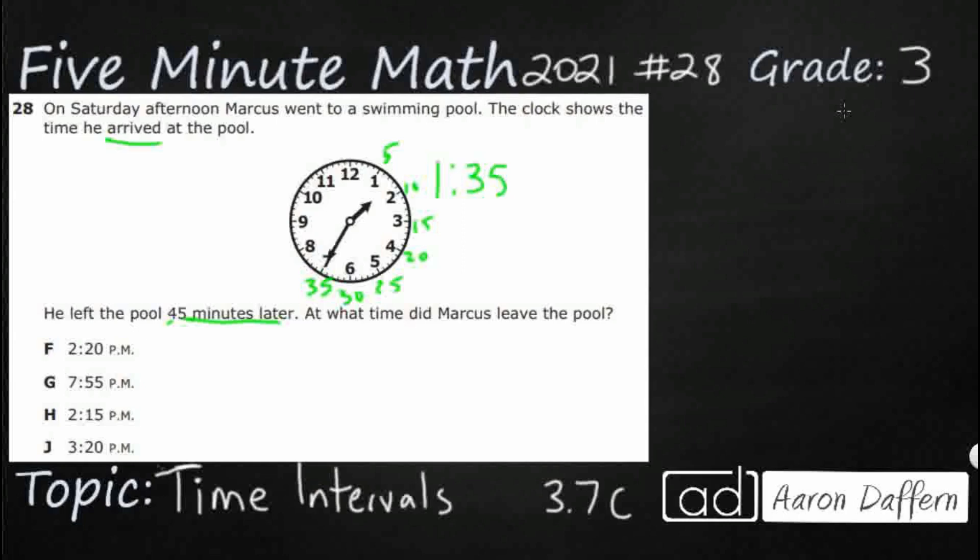Now the reason adding time is so difficult is because we can't necessarily just line it up like an addition problem, right? Like 135 plus 45. I mean, we could, but the answer we're going to get is going to be very strange because there are 60 minutes in an hour, but our number system is based off sets of 10 and 100. So watch what happens when we do this. We get 180. What in the world is 180? That's not even a time. So that's why we can't really add time like this. Sometimes it works, but the second it goes over the next hour, it just becomes strange. So we need to do something a little bit different.